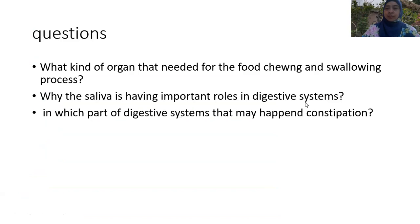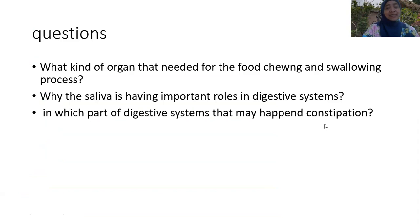Questions for the digestive system: What organs are needed for the food chewing and swallowing process? Why does saliva play an important role in the digestive system? And in which part of the digestive system can constipation happen? These are easy answers you can find in the previous slides.